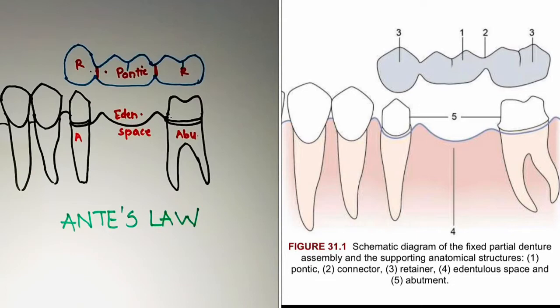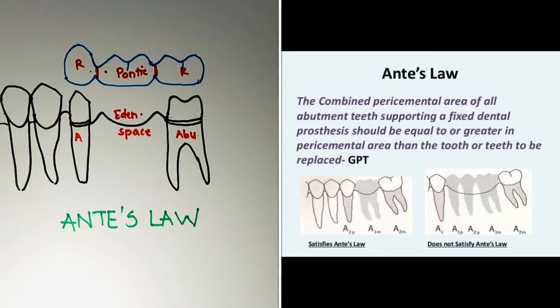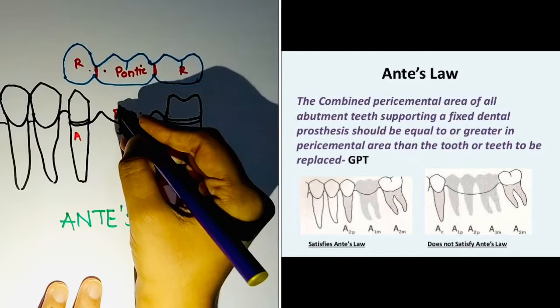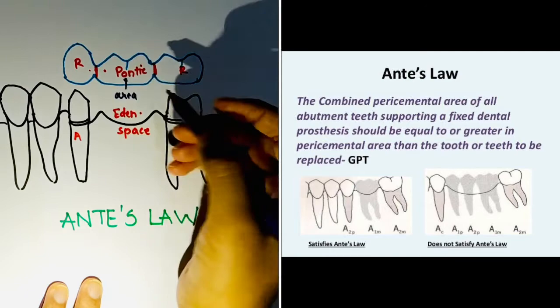Now, where is Ante's Law applicable? The concept of Ante's Law was formulated by Irvin Ante in 1926. It helps in deciding the amount of bone support needed in fixed partial dentures. The definition states that the sum of the periodontal area of the abutment teeth should be equal to or more than the periodontal area of the teeth being replaced.